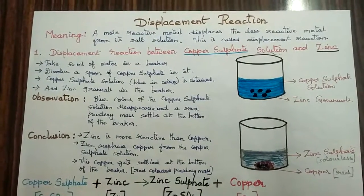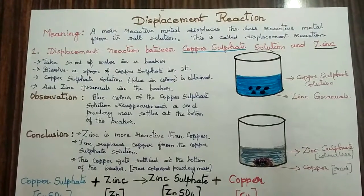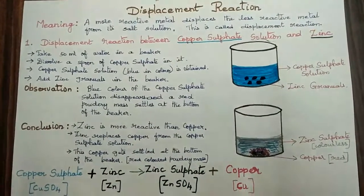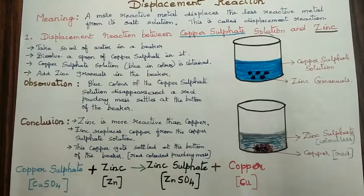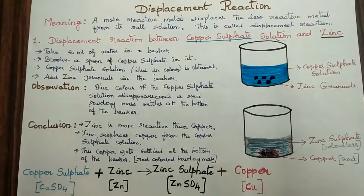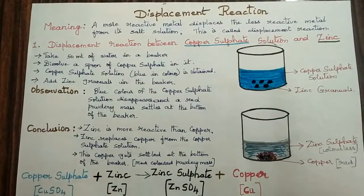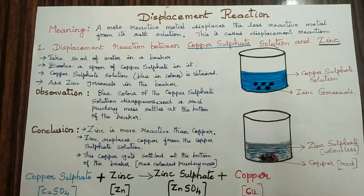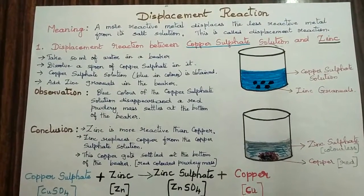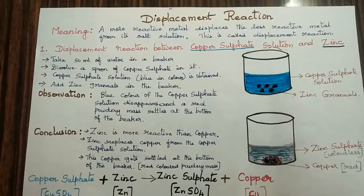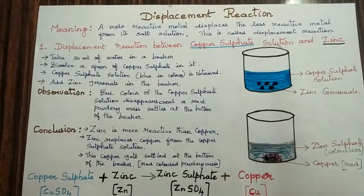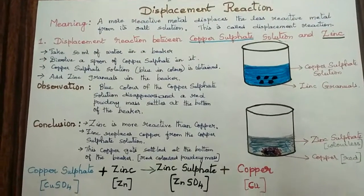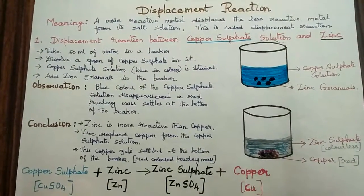First activity: displacement reaction between copper sulfate solution and zinc. The procedure is to take 50 ml of water in a beaker. Dissolve a spoonful of copper sulfate in it. Copper sulfate solution, which is blue in color, is obtained. Add zinc granules in the beaker, as you can see in the diagram.